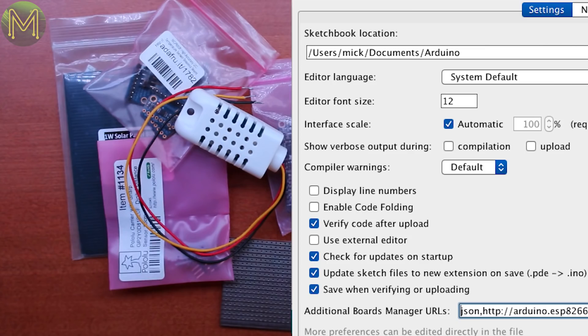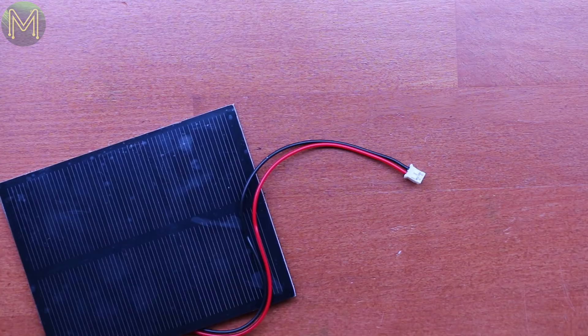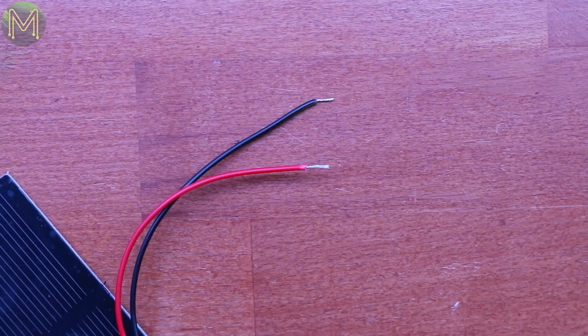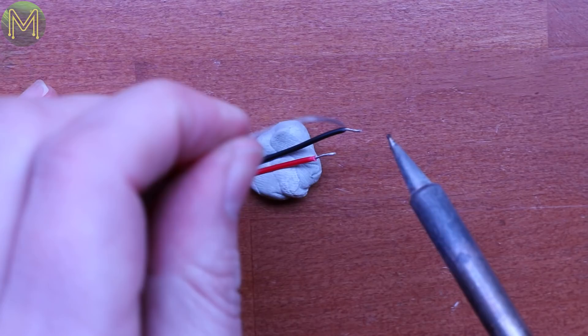First of all, I wanted to check out the power situation, so I cut off the header to the solar panel, stripped, and tinned the wires. I use BluTac all the time as a third hand. It's cheap and can quickly hold things still. Then wire it up to the terminal block of the LiPo charger.